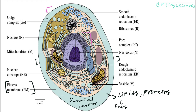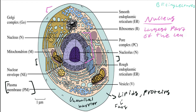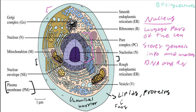Now we will be talking about the nucleus. The nucleus is the largest part of the cell. What does the nucleus do? The nucleus stores genetic information and makes most of the DNA and some RNA. It is also bound by a double membrane — as you can see on the diagram, the nucleus is enclosed by a thick membrane and then a very thin membrane over that — so it has a double membrane for added protection.